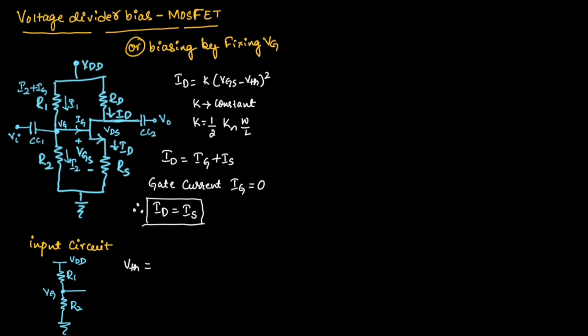Thevenin's resistance can be found by taking R1 parallel with R2. That will be equal to R1 R2 divided by R1 plus R2.